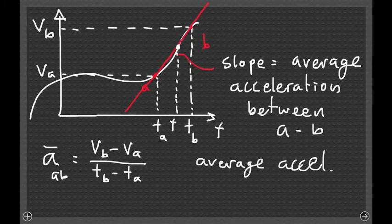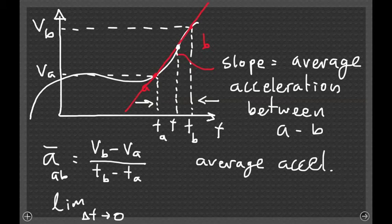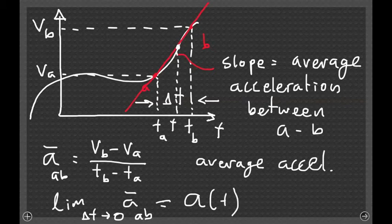What we'll do is, as before, we take the limit when the points a and b, located on both sides of the point of interest, tend towards the time t. So when we take the limit, Δt going to zero, Δt being of course this difference between t_b and t_a, the limit when Δt goes to zero of the average acceleration gives us the instantaneous acceleration at time t.